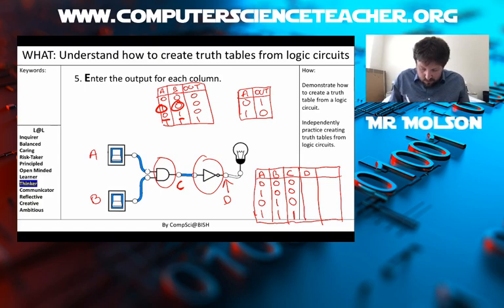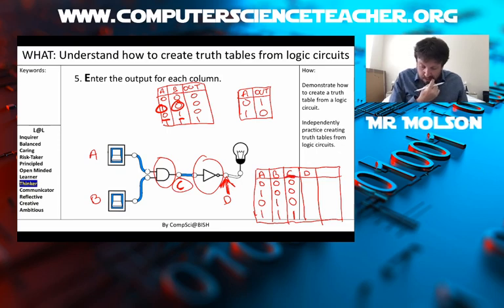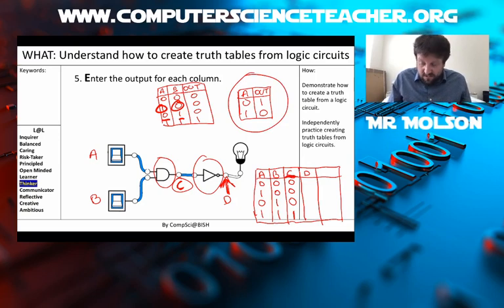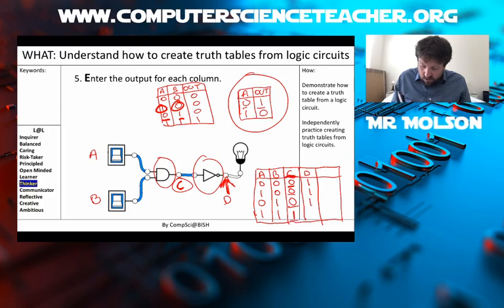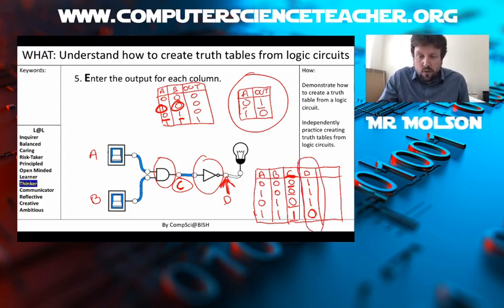Now I'm gonna do my second output column to find the final output. My input is now column C, and I'm going to put column C through the NOT gate. So here's my truth table for the NOT gate — my inverter. I've got a zero, so I put a one. Zero again — one. Zero — one. And I've got a one, so I put a zero. That column is the final output of this circuit — the truth table for this logic circuit is complete.